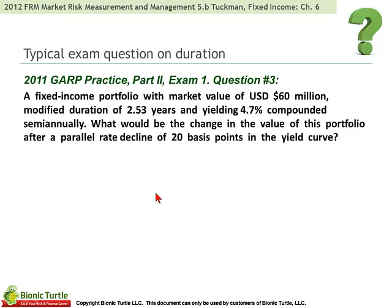I've included a typical exam question on duration from the 2011 Part 2 practice exam. GARP gets a little fuzzy sometimes between the Part 1 and Part 2 distinction on duration — just because we're in Part 2, you definitely don't want to neglect basic duration understanding, as it's still the question you're most likely to encounter. So: a fixed income portfolio with market value of $60 million and a modified duration of 2.53 years yields 4.7% — this is yield to maturity, compounded semi-annually. On the exam, the most common yield is yield to maturity compounded semi-annually. Notice GARP correctly provides the compound frequency for us.